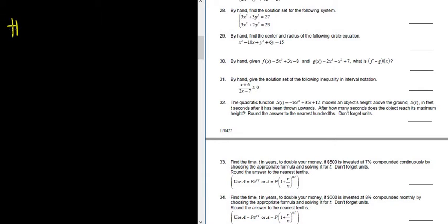Number 32, the quadratic function s of t equals negative 16 t squared plus 35 t plus 12